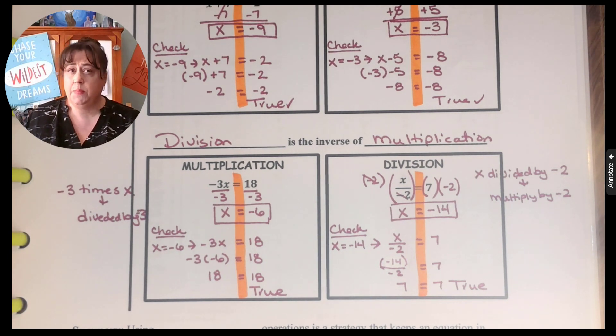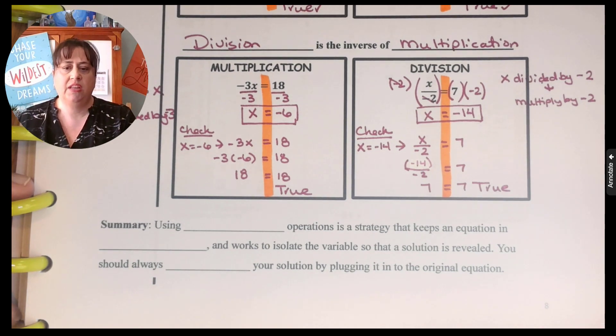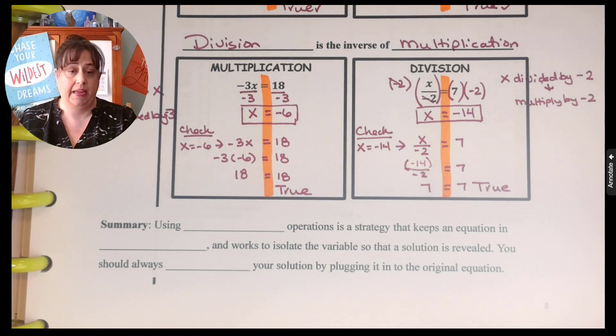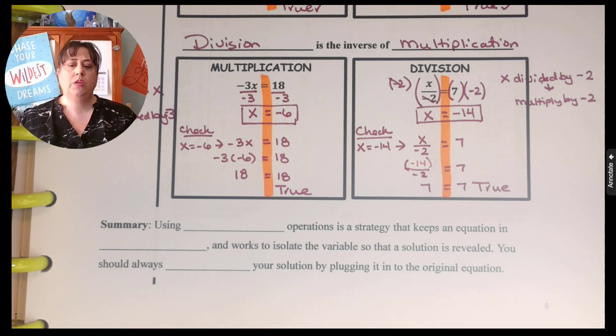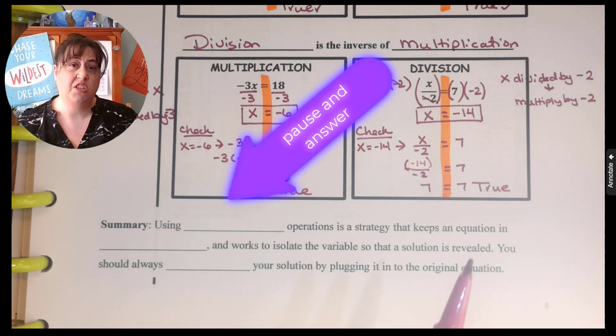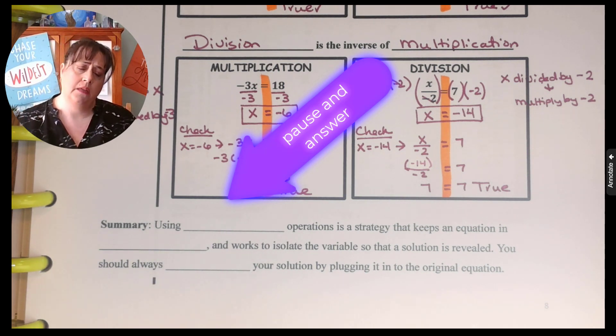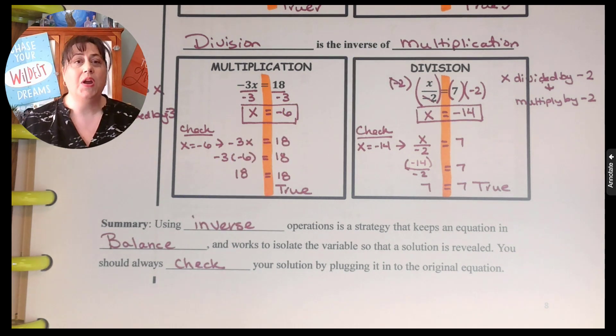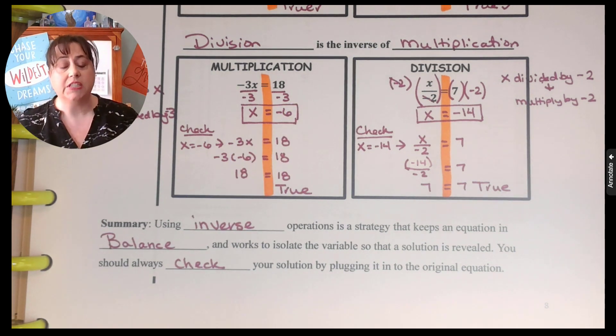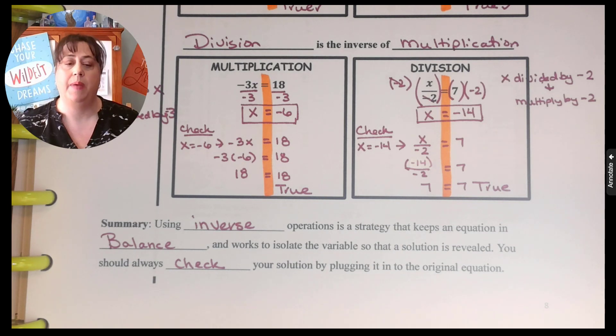Okay, today we're actually going to look at the summary together. Using blank operations is a strategy that keeps an equation in blank and works to isolate the variables so that the solution is revealed. You should always blank your solution by plugging it into the original equation. I actually think you guys can do this on your own. So I'd like you to pause it and I'd like you to think about what should go into those three blanks and then come on back and see how you did. So check your work. How did you do? Using inverse operations is a strategy that keeps an equation in balance and works to isolate the variable so that a solution is revealed. You should always check your solution by plugging it into the original equation.